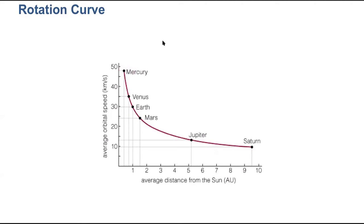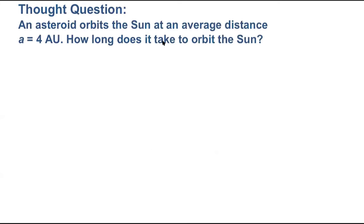So not only does Mercury have a shorter orbit — it's much closer to the sun — but it's also moving faster in its orbit. For both of those reasons, Mercury's orbital period is much shorter than Venus, which is much shorter than Earth and Mars and Jupiter and Saturn. So not only do these outer planets have further to go to get around the sun, but they're moving slower as they're doing it. Here's a thought question: an asteroid orbits the sun at an average distance of four astronomical units. What is its orbital period? How long does it take to orbit the sun?